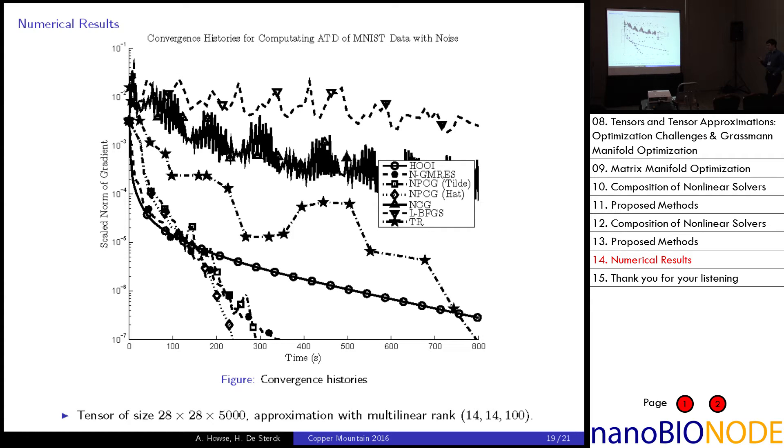So, for a numerical example at least, this is for the tensor. So, we have input data which is a collection of handwritten digits. This gives us a tensor of size 28 by 28 by 5,000. And we compute a multilinear rank approximation 14, 14, 100. So, we trim down the size quite significantly. The line with circles is for HOOI, which is the most commonly used one and what we want to beat. Down here are the results of, let's see, NGMRES with asterisks and NPCG with diamonds and squares for the different possibilities for our beta parameters. So, we are able to beat the standard method by quite a significant amount of time. So, that's great.